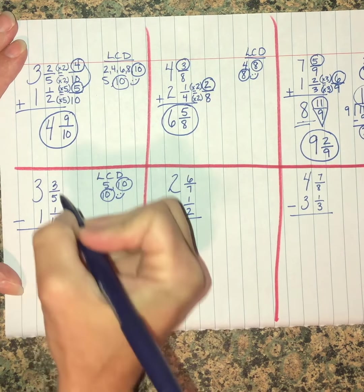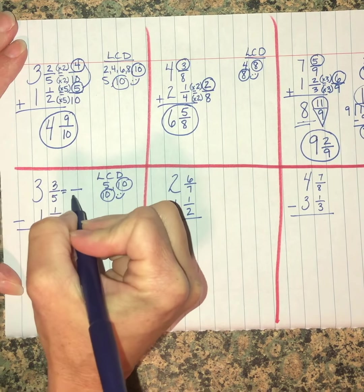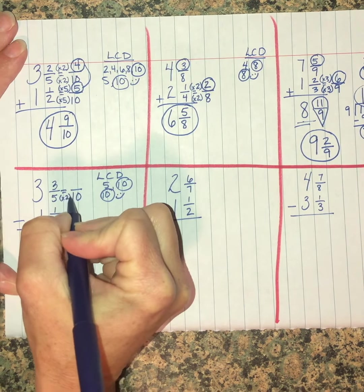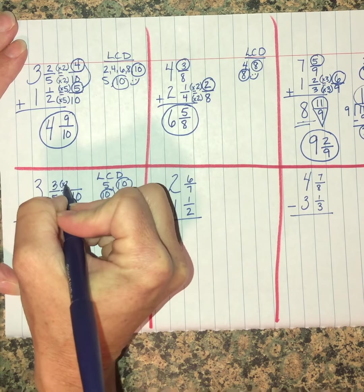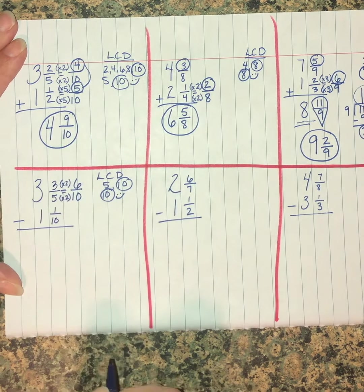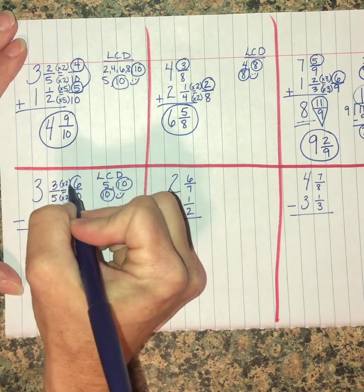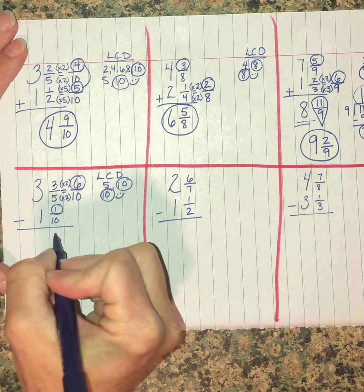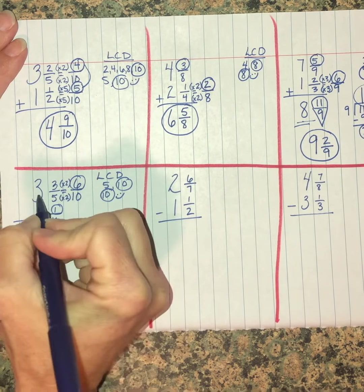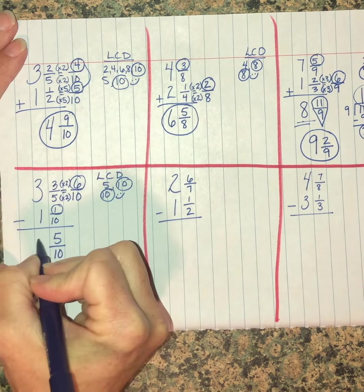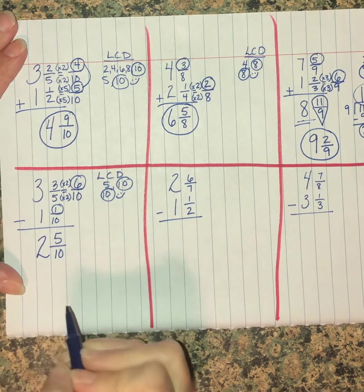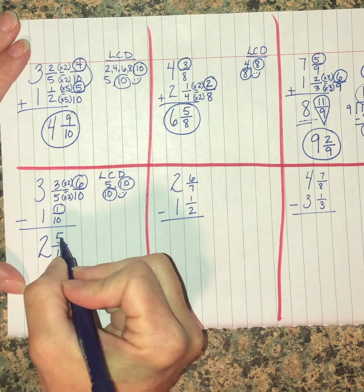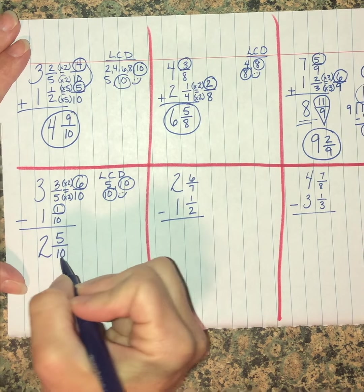I don't need to change one-tenth, but three-fifths we're going to make into tenths. Five times two is ten, three times two is six. Now I'm subtracting six-tenths minus one-tenth is five-tenths. Three minus one is two.